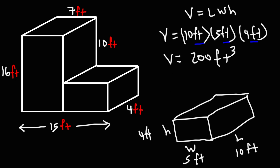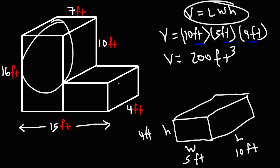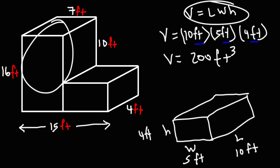So we're going to use this formula to calculate the volume of each rectangular prism, and then we're going to add them together to get the total volume of the composite rectangular prism.